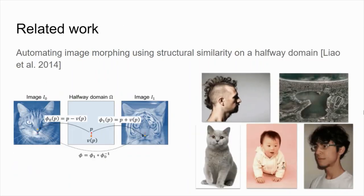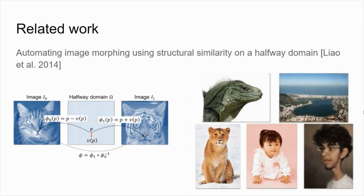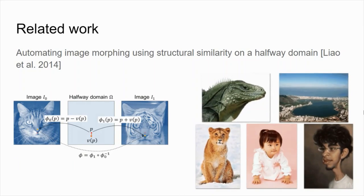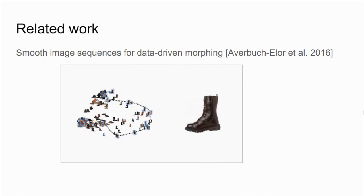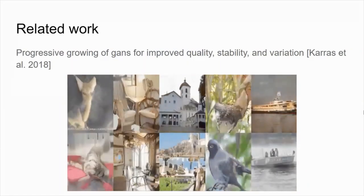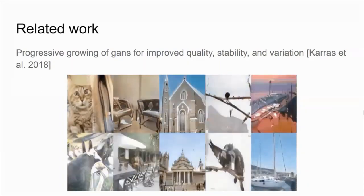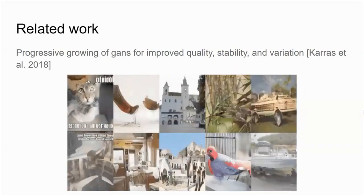Bringing both images into a halfway domain facilitates more dramatic transitions that are both realistic and smooth. With the help of a collection of images that allow for smooth traversal via visually similar instances, a sequence of transitions depicting large pose changes can be achieved. Latent spaces formed by generative neural networks allow for smooth interpolations, but those are limited to regions of the latent space that the generator has mastered, and are often unable to faithfully reconstruct existing instances that may be given for interpolation.